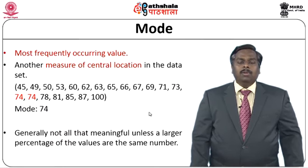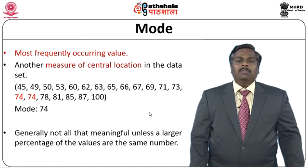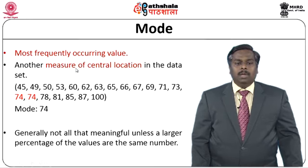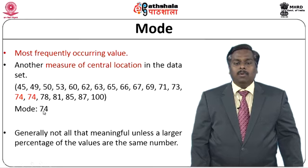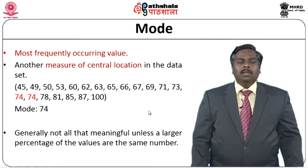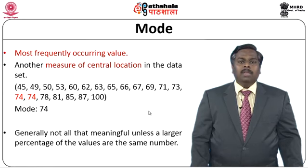The next metric is mode. Mode is actually the most frequently occurring value in the data set, and it is another metric used for measuring the central location of the data. In this given data set, we identify 74 as the mode, done by identifying the frequency of occurrence of each value — 74 has occurred twice. Normally, mode may not convey more semantics about the data, and it is often not used for analysis.